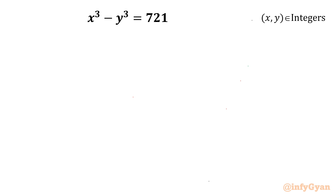Welcome to InfiGyan, my dear friends. In this video we are going to take up one very interesting, challenging question from Diophantine equations, where we have to find out the ordered pair (x, y) where x, y belong to integers. The given equation is x³ - y³ = 721.